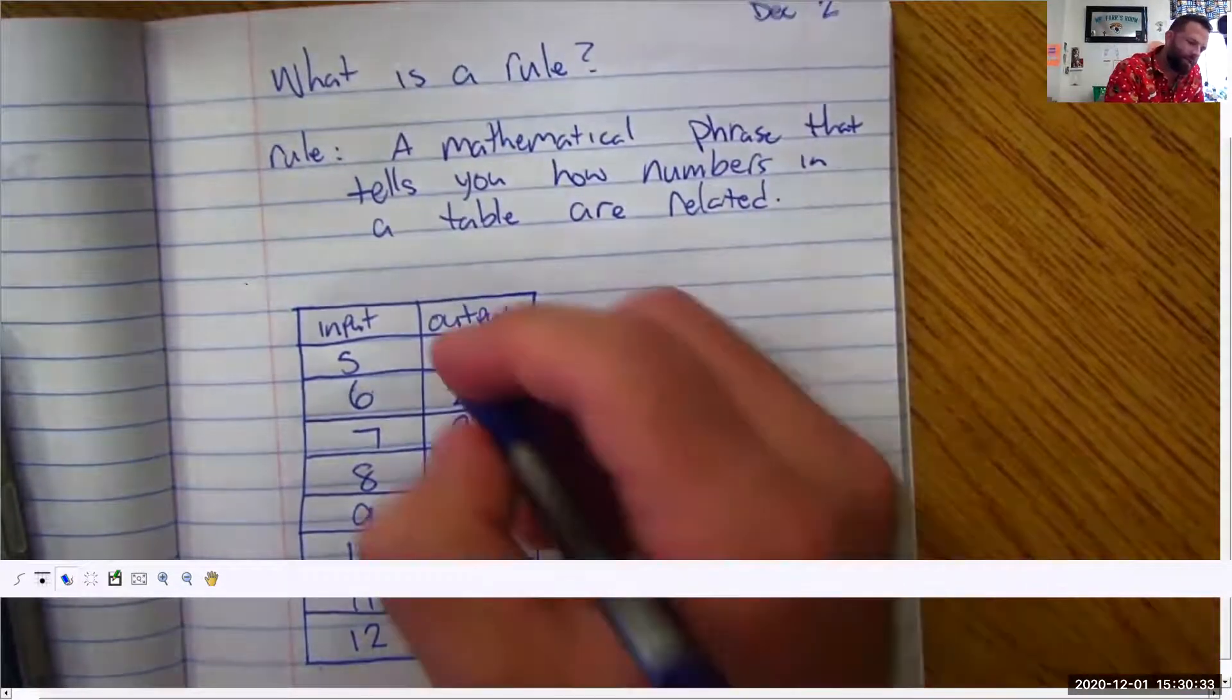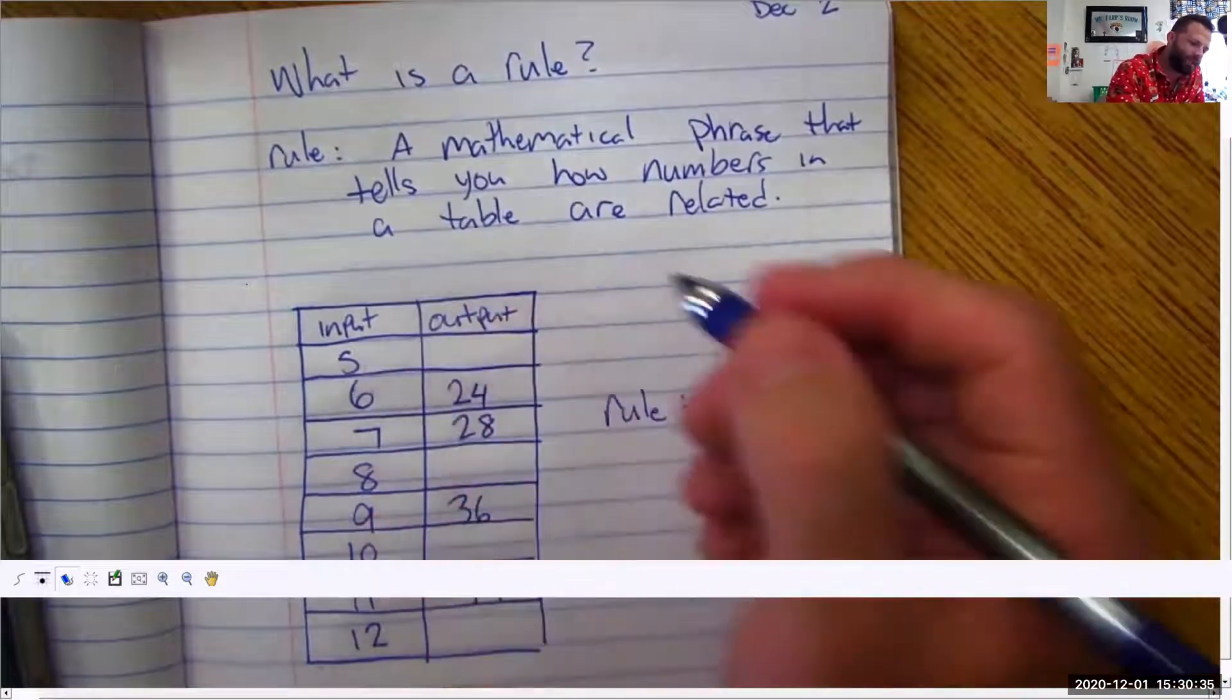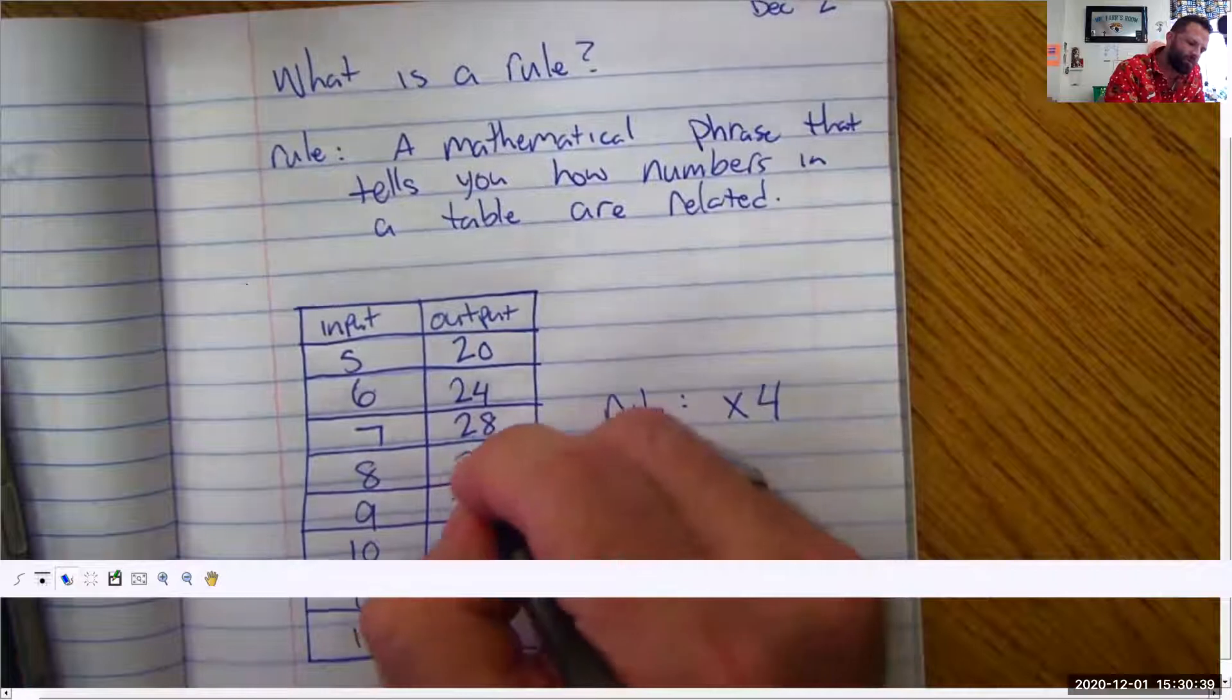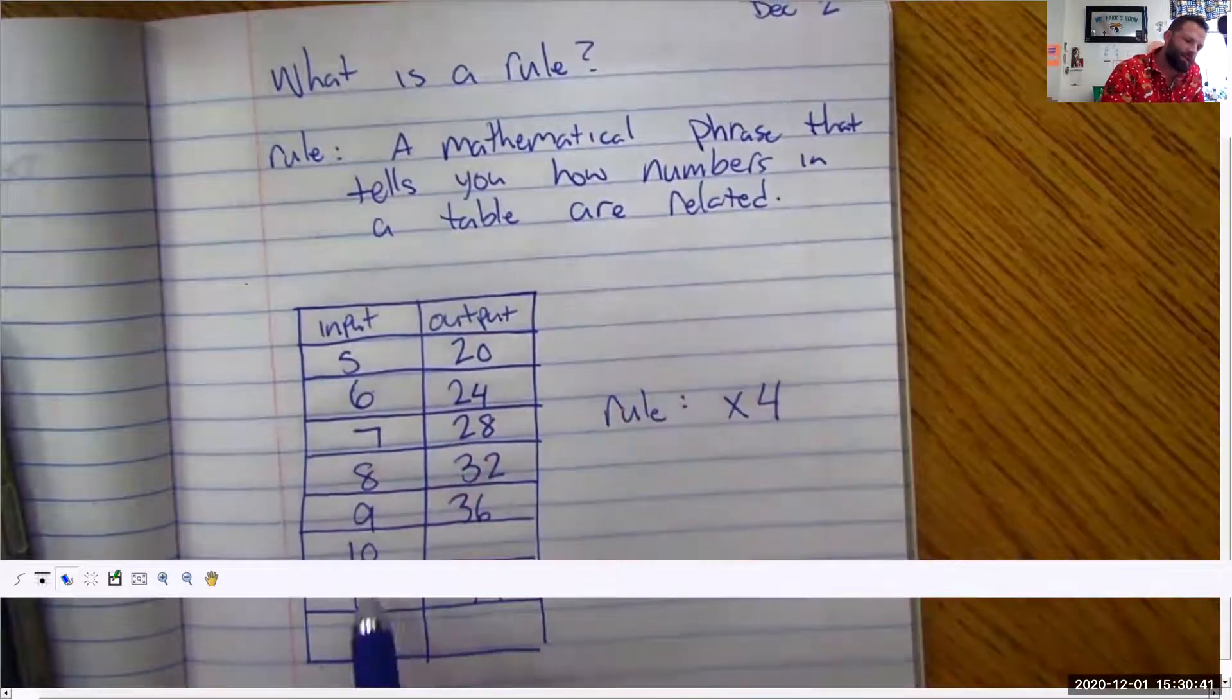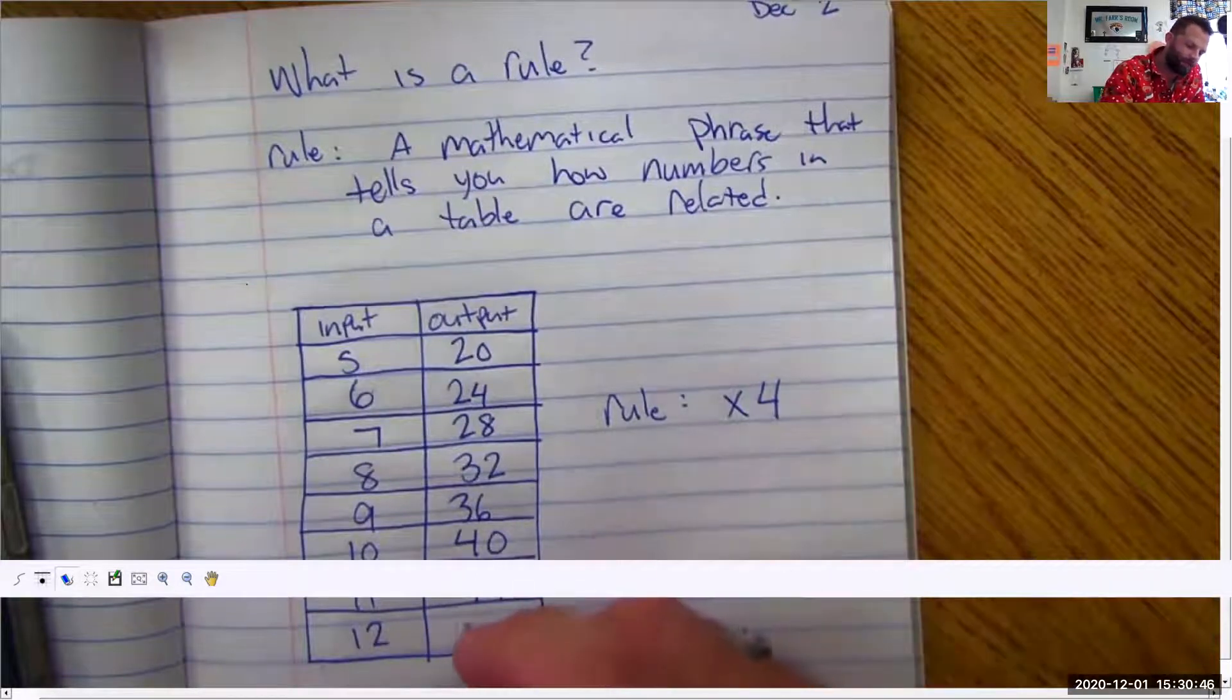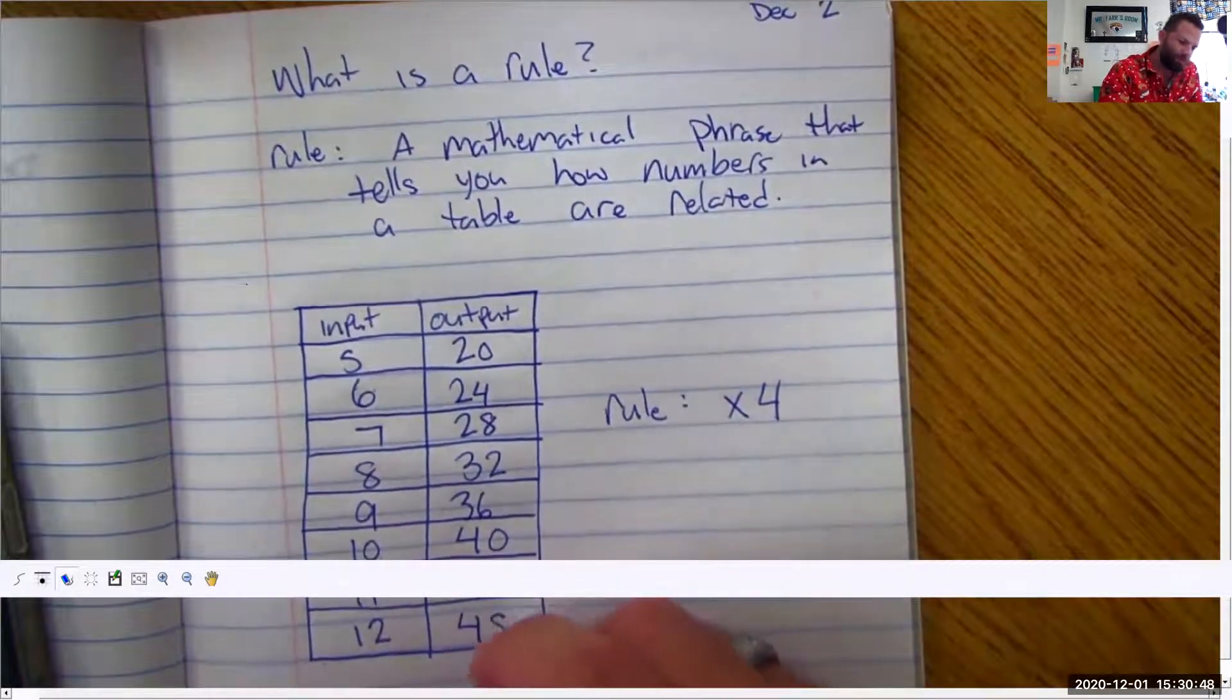The rule on this is multiply by four times four. Okay. Now we can go ahead and start filling these in. Five times four. Well that's going to be twenty. Eight times four is thirty-two. Ten times four is forty. And twelve times four is what is that? Forty-eight. Beautiful.